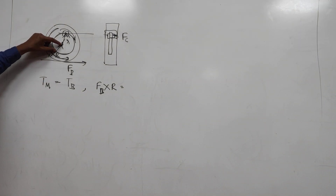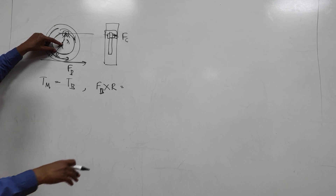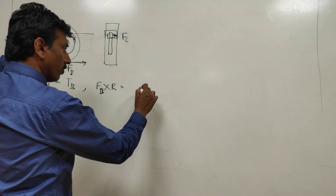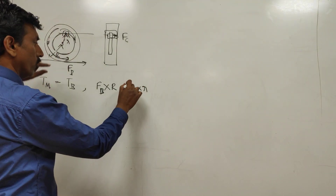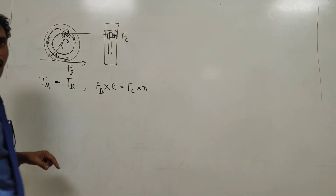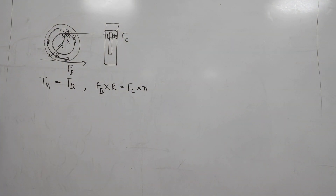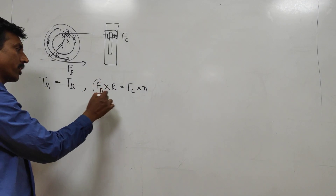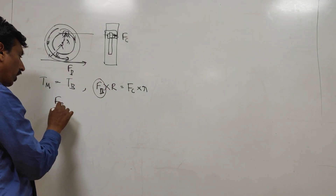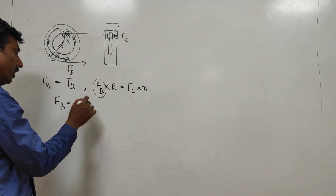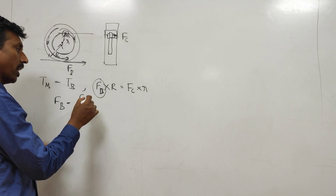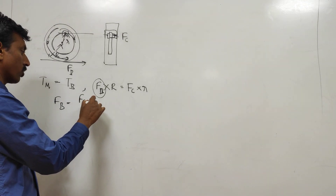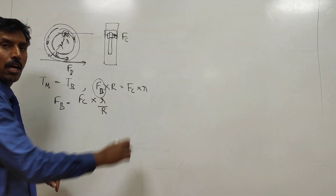At this point the brake is trying to stop the wheel from rotating. That radius is small r, and the force there is FC — the clamping force. So I can write the braking force FB as FC multiplied by small r divided by capital R.